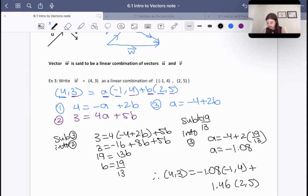Okay, so now I'm going to sub our answer, 19 over 13 into equation 3. So therefore, a would be negative 4 plus 2 times 19 over 13. And let's solve for a, so 19 times 2 equals 38, divide by 13, and then minus 4, that gives us about negative 1.08. So therefore, we can conclude that (4, 3) is equal to negative 1.08 times (-1, 4), plus 1.46 times (2, 5).